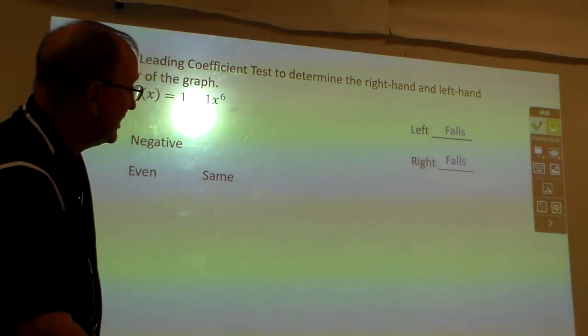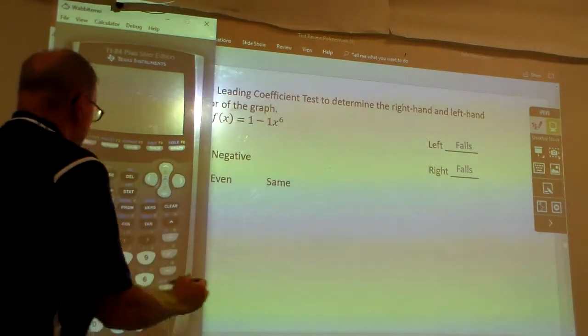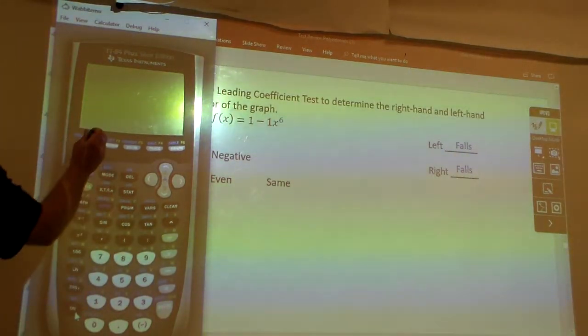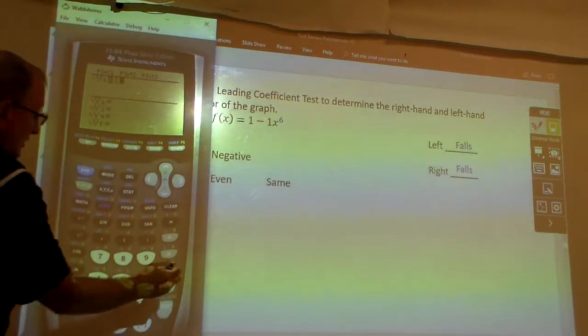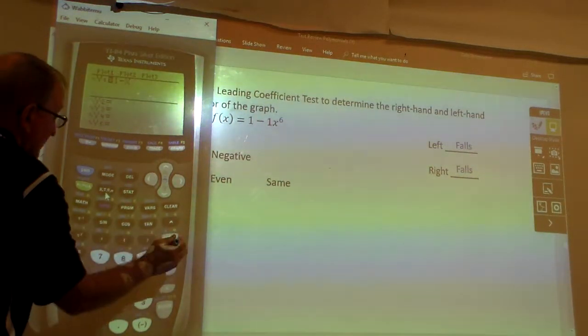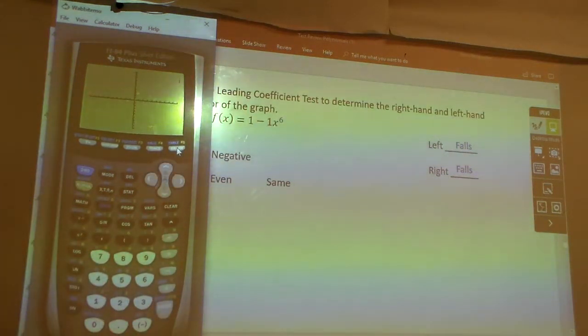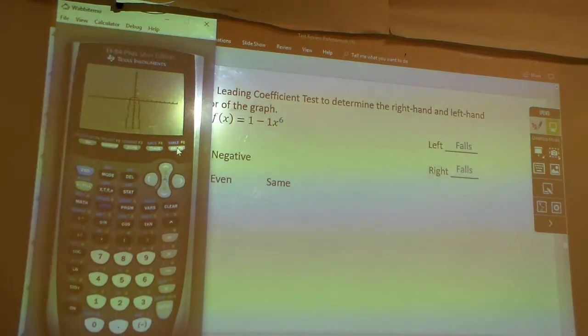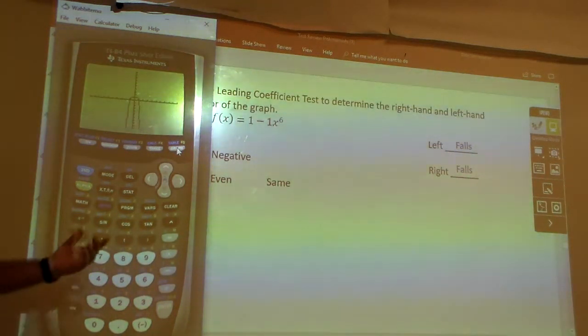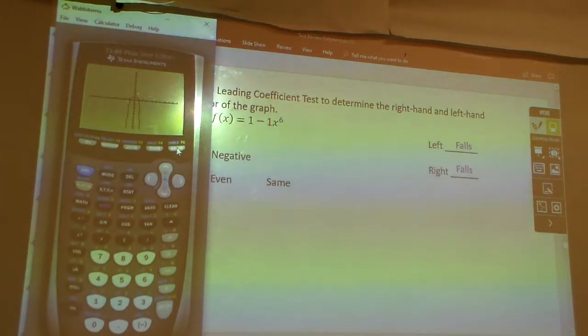Now if y'all hold up one second, if you're copying that down, I'm going to go to the calculator, because guess what else you can do with the calculator on these? Turn it on. I'm going to go to y equals. Let me clear that previous one out. And y'all, if I do one minus x to the sixth power, and I hit graph, what's the left and right side both doing on this? Fall. You can also do it that way. You can graph it and just look to see whether they're rising or falling. Those are the easiest ways to do that on those problems right there.